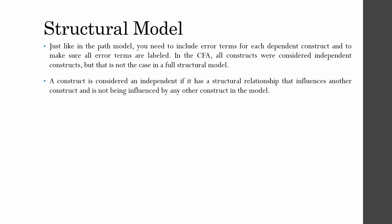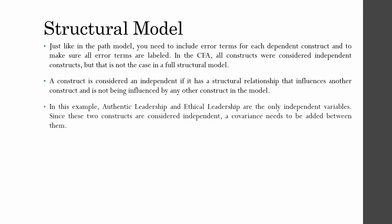Your construct is truly independent only if it influences another variable and is not being influenced by any other variable. If you have more than one independent variable that fits this definition, they will be covaried with each other. In this example, we have two independent variables — authentic leadership and ethical leadership. These are truly independent variables, so a covariance needs to be added between them. We are going to practically draw the model.